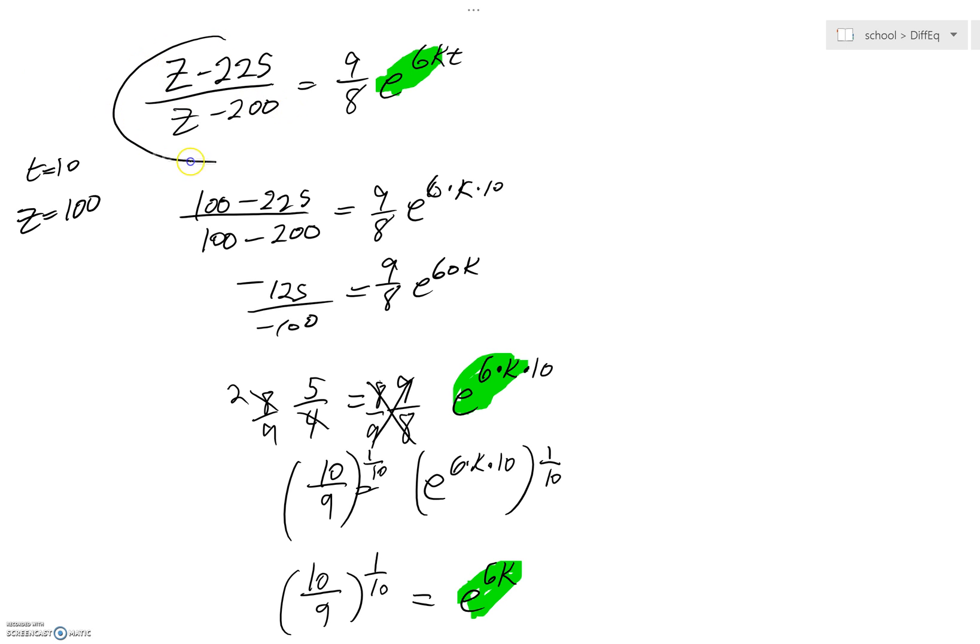If you go back up to your top equation, you can see that we now have z minus 225 over z minus 200 is equal to 9 eighths. But this e to the 6k is really 10 ninths. And it's raised to the 1 tenth power. We also have a t up there. That would go to t over 10.